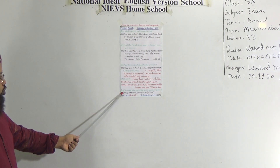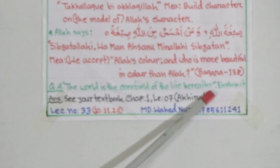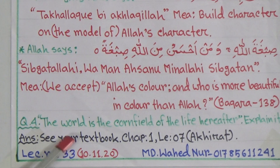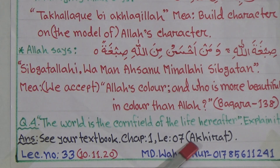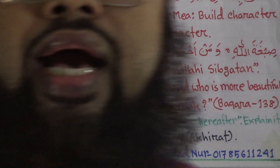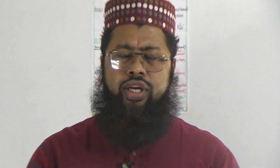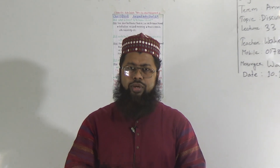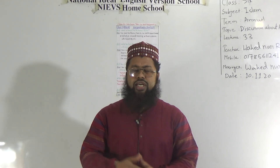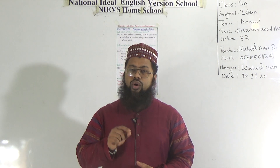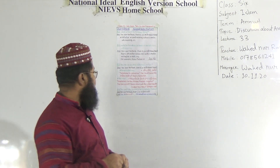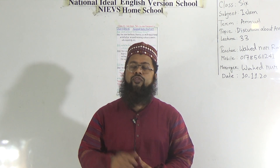Now, question number 4: 'The world is the cornfield of the life hereafter.' Explain it. My dear students, you will get this answer in Chapter 1, Lesson 7, the Akhirat-related lesson. In Arabic it is called Ad-Duniya Mazra'atul Akhirat — but no need to write it in Arabic, because there is no Arabic in your book or in the question. I am just telling you the Arabic is Ad-Duniya Mazra'atul Akhirat — it means the world is the cornfield of the life hereafter.